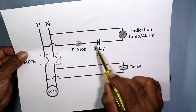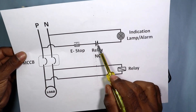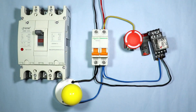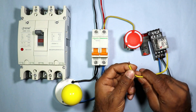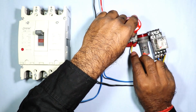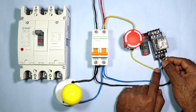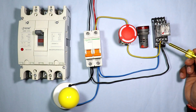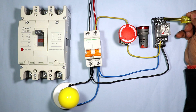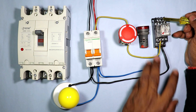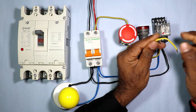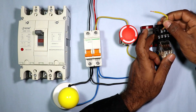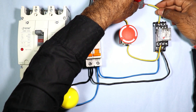From the emergency stop push button, the power supply will go to the NC contact of the relay, and from there it will go to the indication lamp. Take one end of a wire and connect it to the output terminal of the emergency stop push button. Then take the other end and connect it to the NC contact of the relay. Then connect a wire from the output terminal of the NC contact to the indication lamp to provide phase supply.